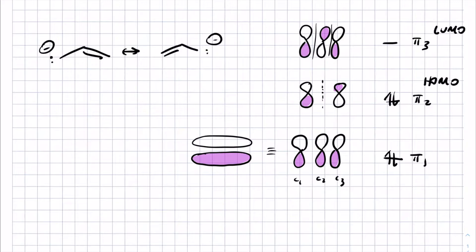I showed you where these orbitals come from mostly because students in the past have been troubled by the middle one that has a node at the central carbon. What you really need to be able to do is: given a set of pi orbitals that I draw for you, rank them in energy and tell me which one would be the HOMO and which one would be the LUMO. To do that, we only need to count the nodes. If you can count, you're good.